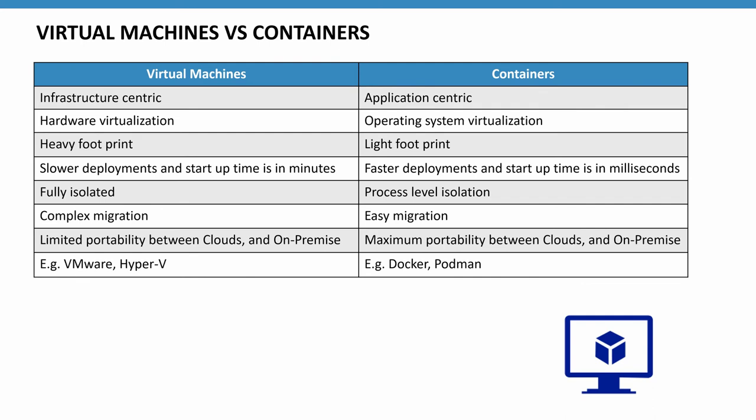Virtual machines perform hardware virtualization, while containers perform operating system virtualization. Virtual machines have limited portability — for example, if you create a virtual machine on Azure, you can't migrate it to AWS. But containers can be migrated across multiple clouds and on-premise environments.